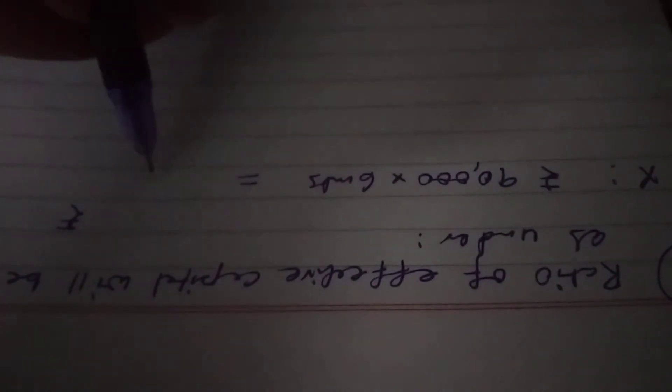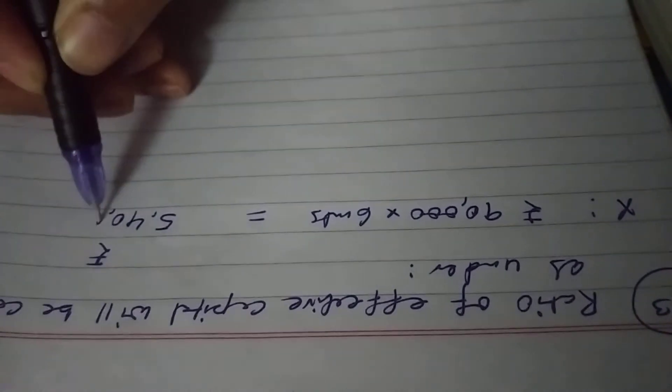Ratio of effective capital will be calculated as under. First is X. Here X contributes Rs 90,000 at first but withdraws Rs 30,000 at the end of 6 months, means Rs 90,000 for 6 months.